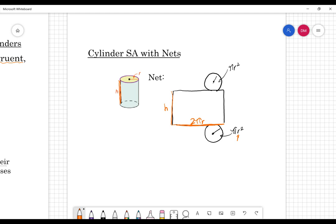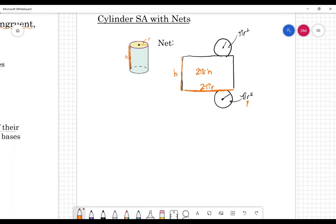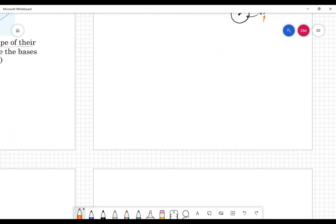So in order to find the surface area, I take the area of this rectangle, 2 pi r times h, and I add on two of these circles here. So I add a pi r squared and another pi r squared. And you can hopefully start to see where a formula is going to come in here. And we'll explore that more tomorrow.